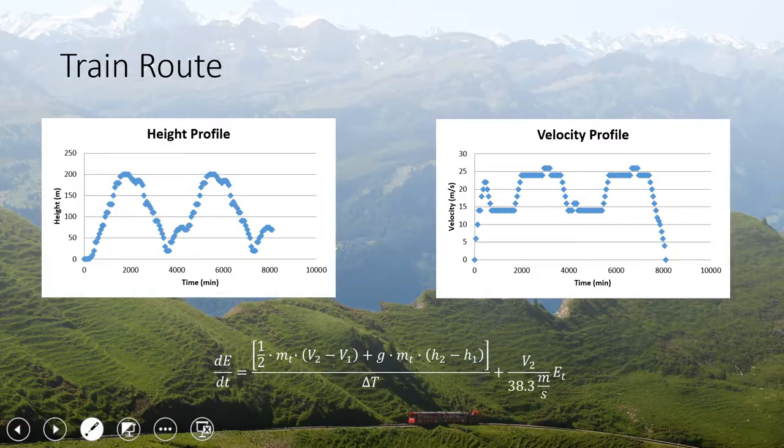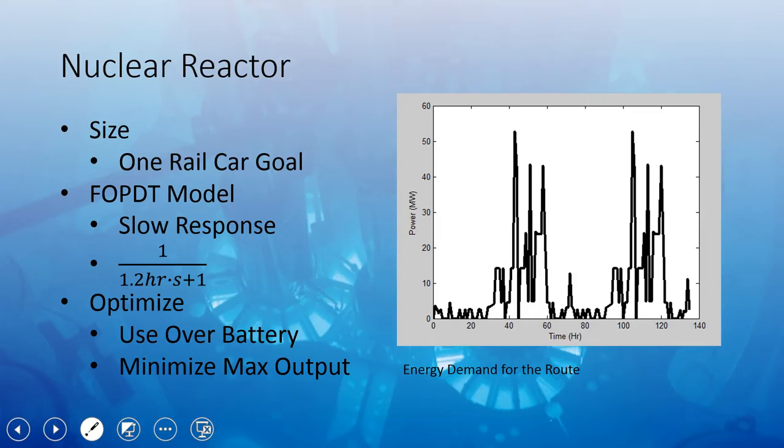The last part of the energy balance is a friction term that we decided to relate to the maximum velocity if the train were going full speed and we didn't have a speed limit, and then the proportional term of the energy. So the main backbone of our project was the nuclear reactor. We wanted to make sure that the size was about one rail car, that was the maximum size that we wanted. We fit it to an FOPT model that had a very slow response time, with a tau of 1.2 hours.